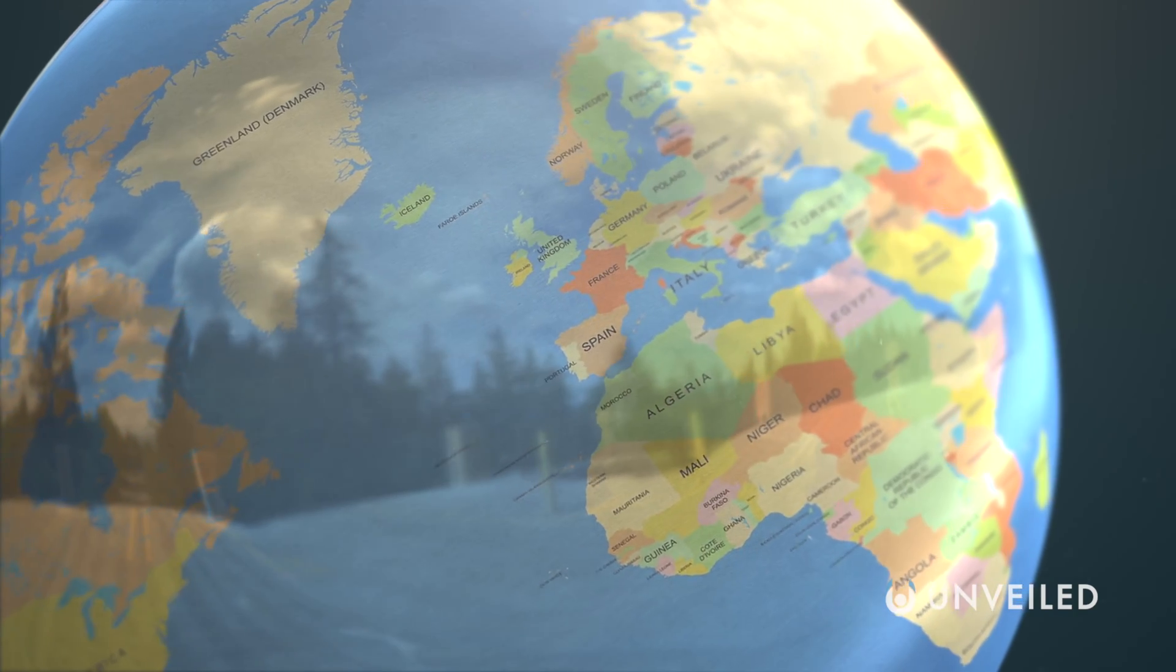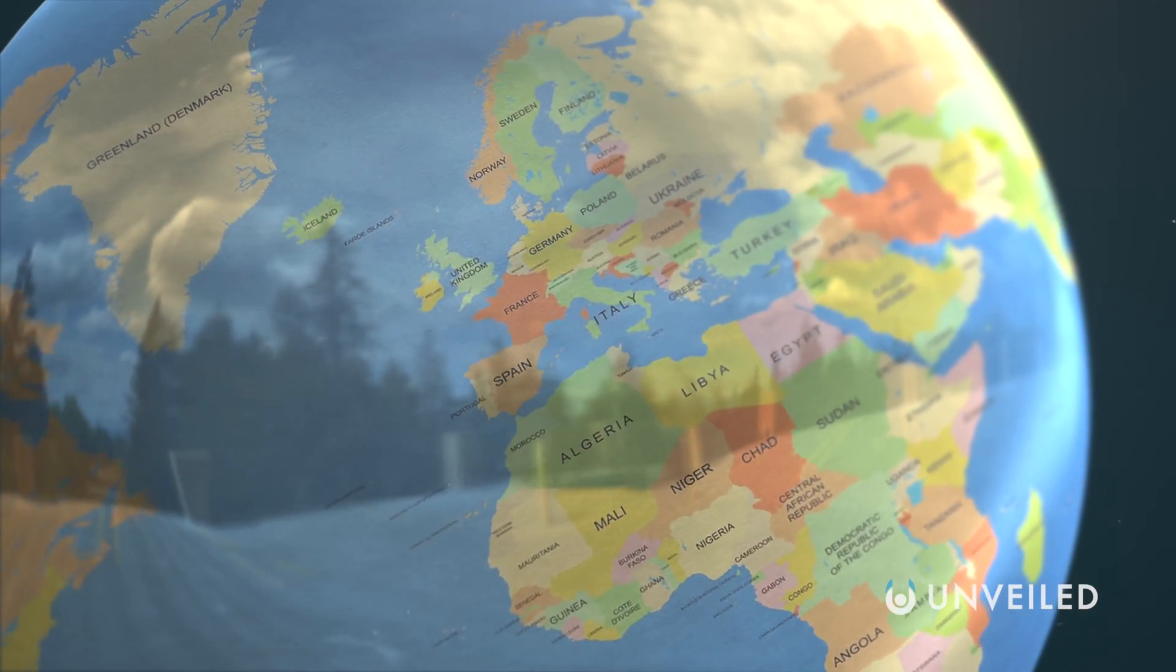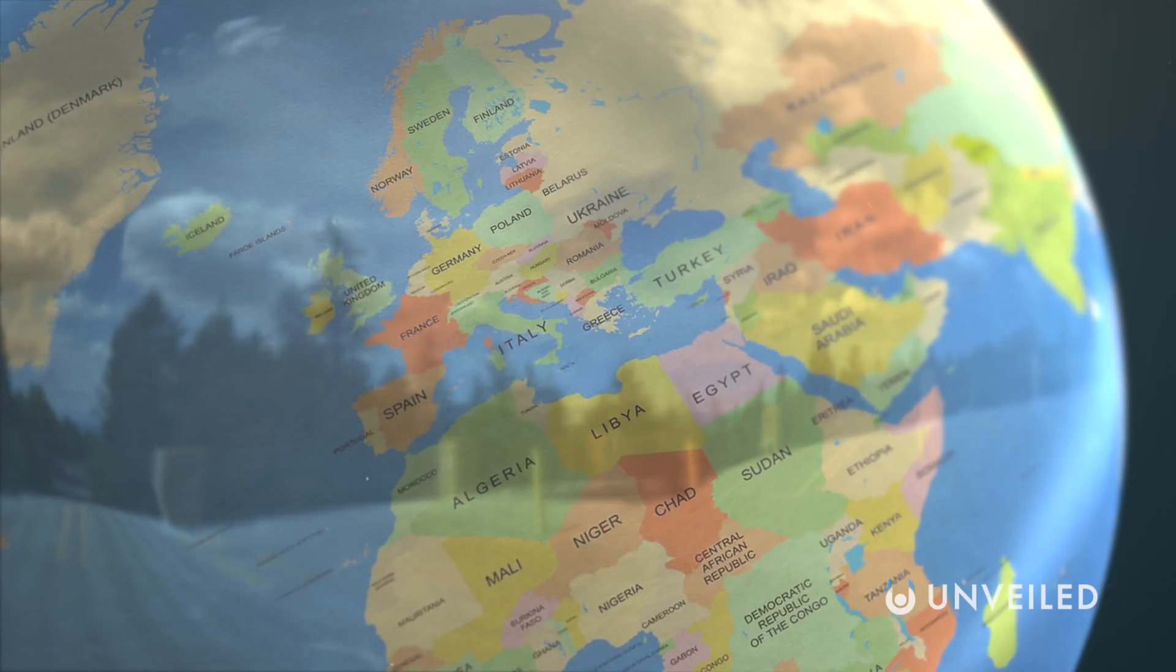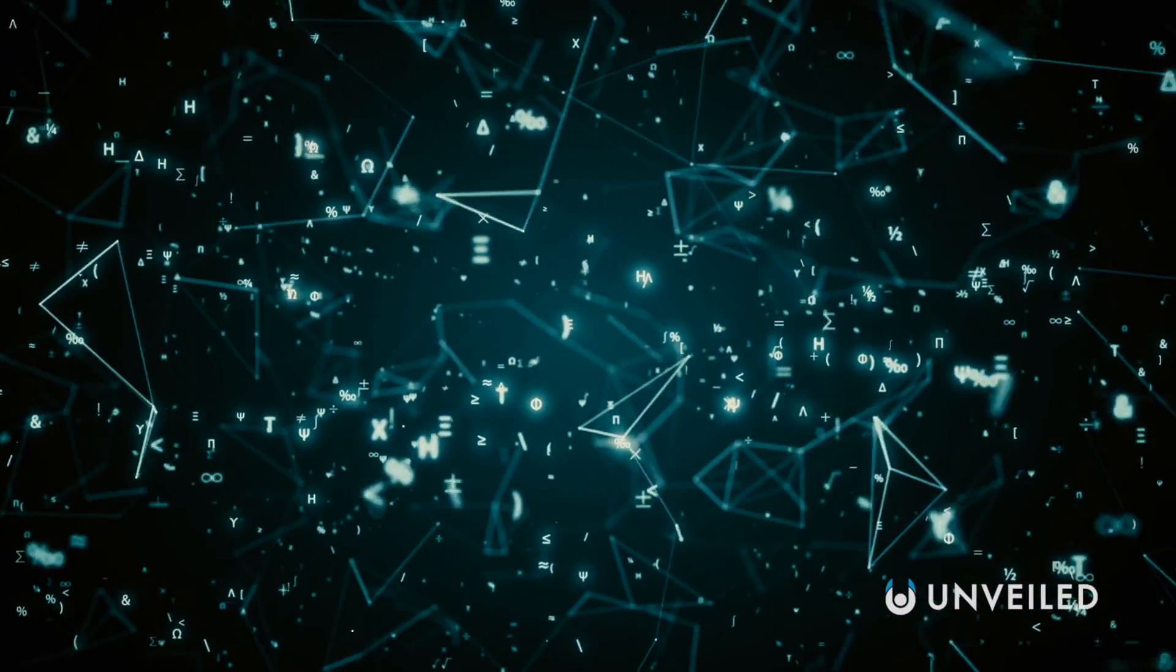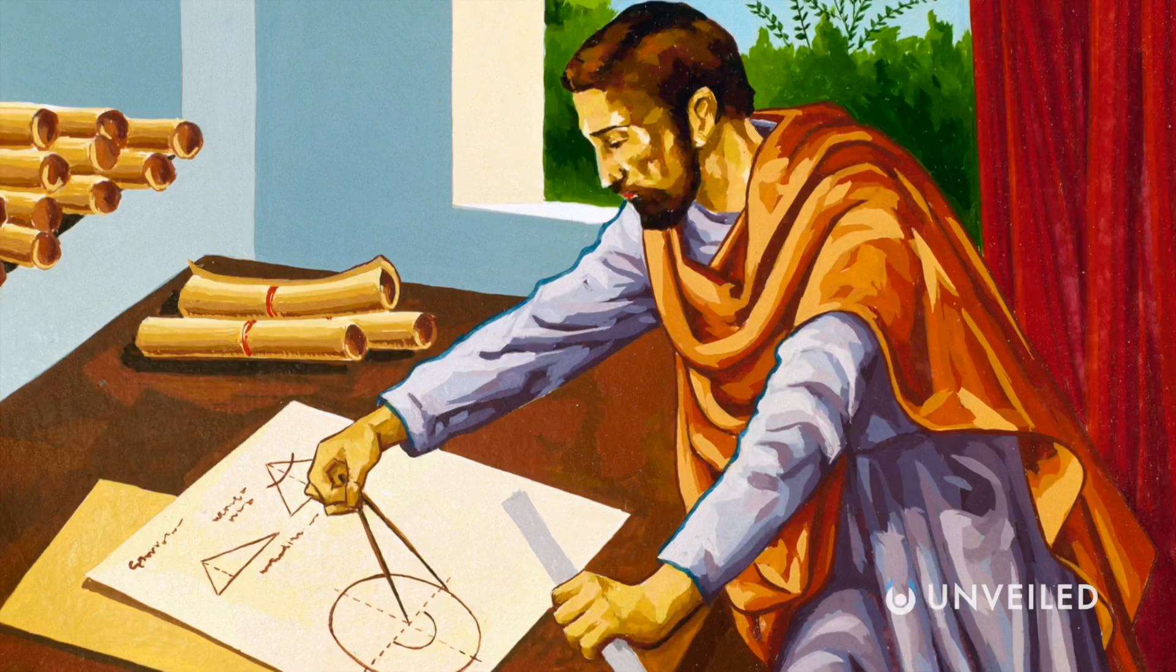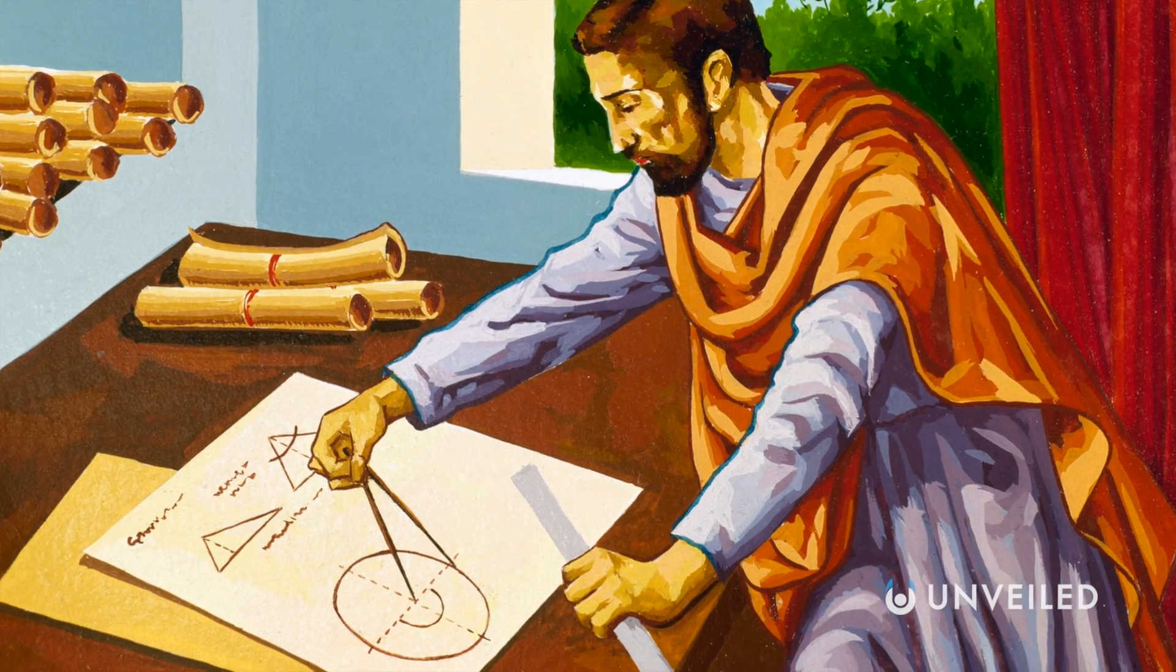It's been fairly obvious to humans for millennia that we're able to move in the three dimensions of space. But there was no formal definition of these until the ancient Greek mathematician Euclid.